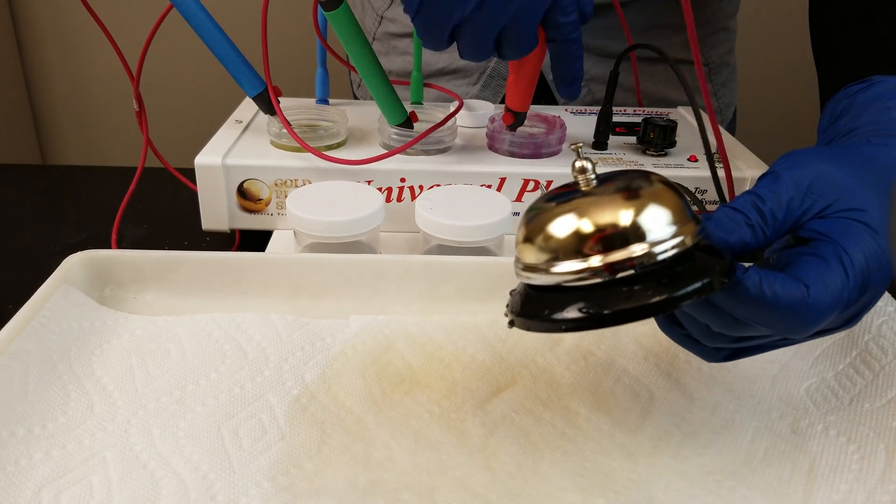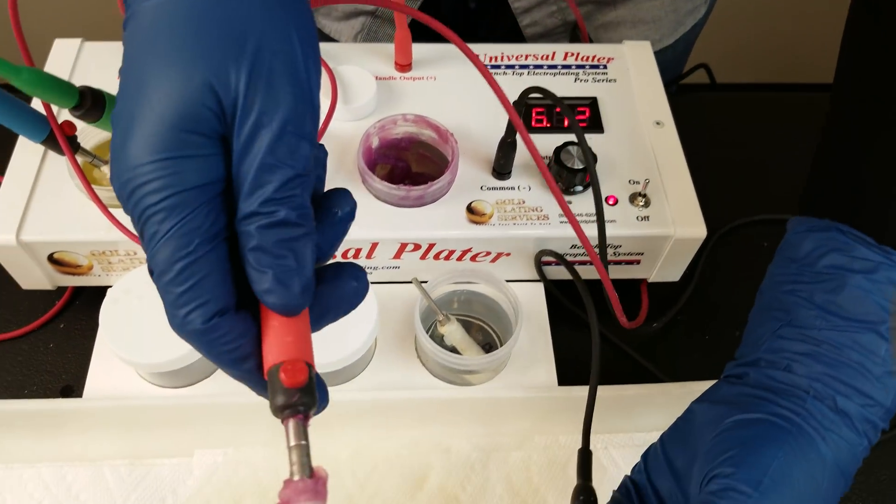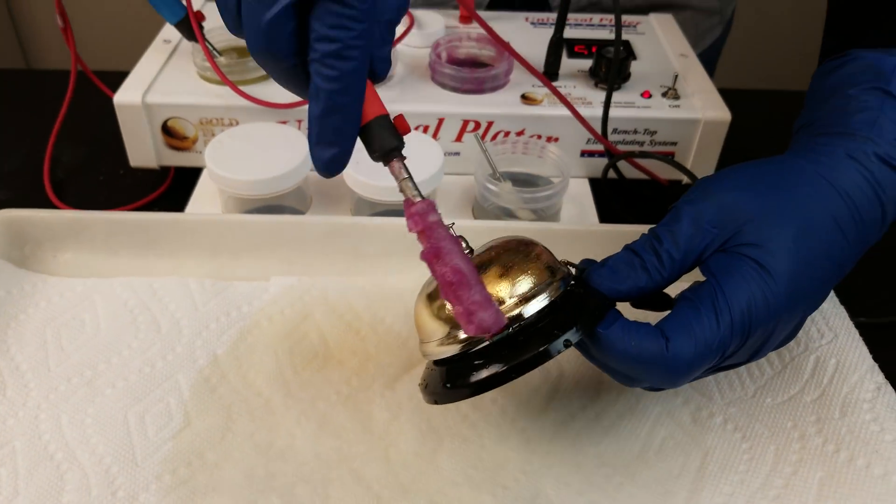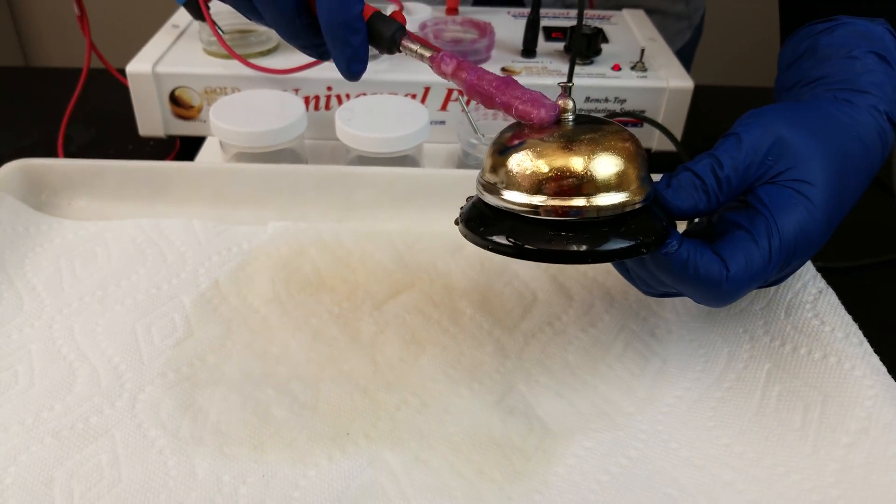Let me turn the voltage down just a little bit. And we'll go ahead and yellow gold plate it. It should be turning gold really fast. I mean, it already was tinted...